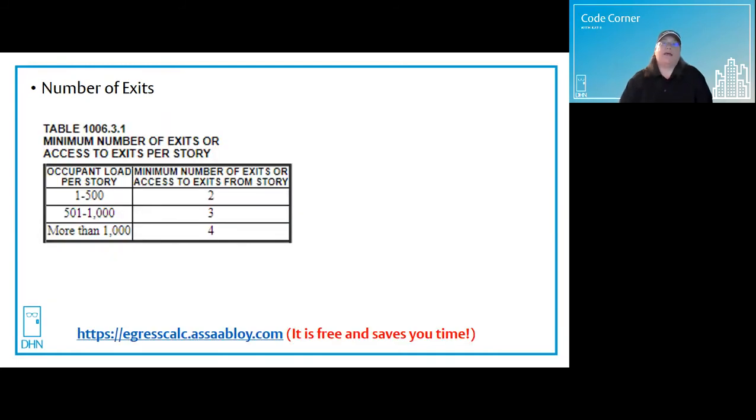The minimum number of exits or exit access per story or space with an occupant load of one to 500 people is two minimum. 501 to 1,000, you need three, and more than 1,000, you're required to have a minimum of four exits.